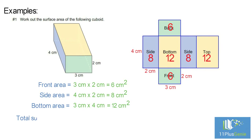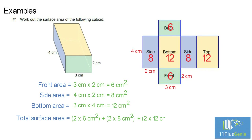Surface area equals two times six centimeters squared, plus two times eight centimeters squared, plus two times twelve centimeters squared, which equals 52 centimeters squared.